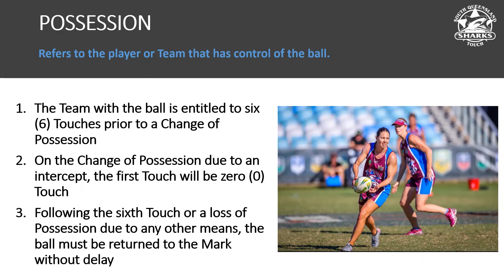Following the six touch or a loss of possession due to any other means, the ball must be returned to the mark without delay. That doesn't mean it's thrown up in the air to the player, rolled across the ground to slow things down, or thrown to someone away from the mark. It can be given directly to another player who brings it back to the mark. If there is a delay, we march 10 metres and give a penalty to the team waiting for possession.